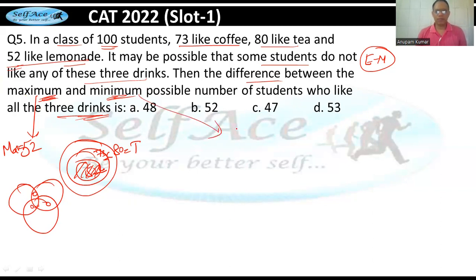Minimum ke liye jo bhimare students unko pata hai ki iska normal tarika hota hai. Yeh kyun hota hai wo bhi idly hota hai in Hindi. Sab ko 100 mein se minus karein jo hai like: 100-73, 100-80, 100-52. This comes out to be 27, this comes out to be 20, this comes out to be 48.